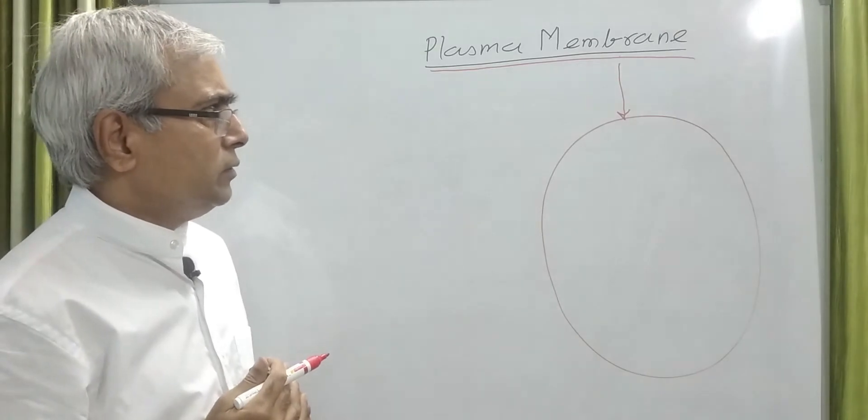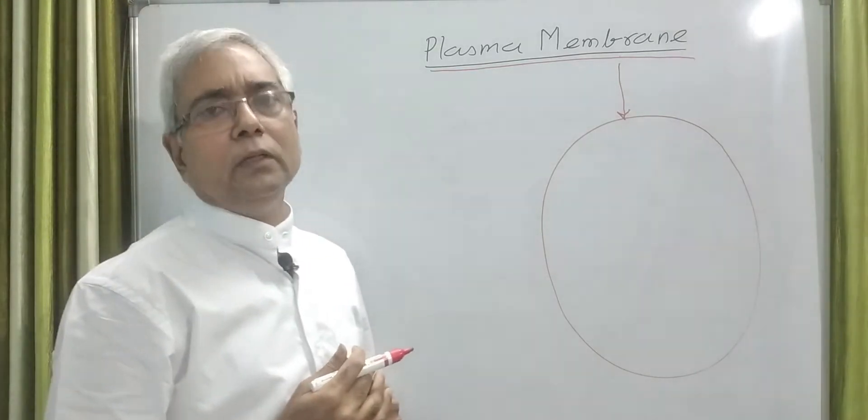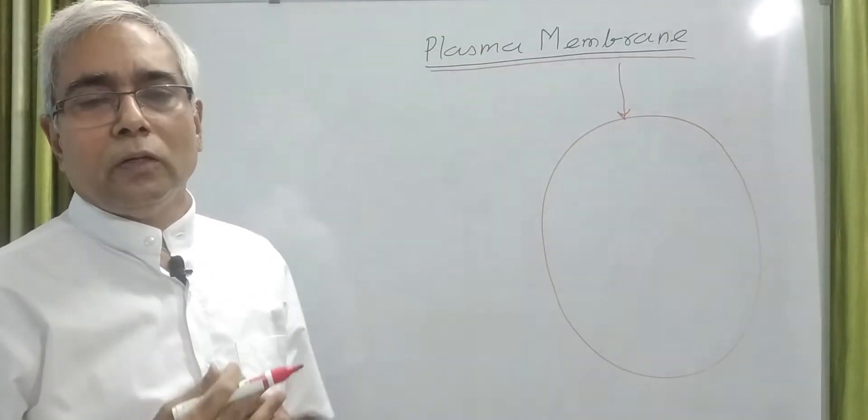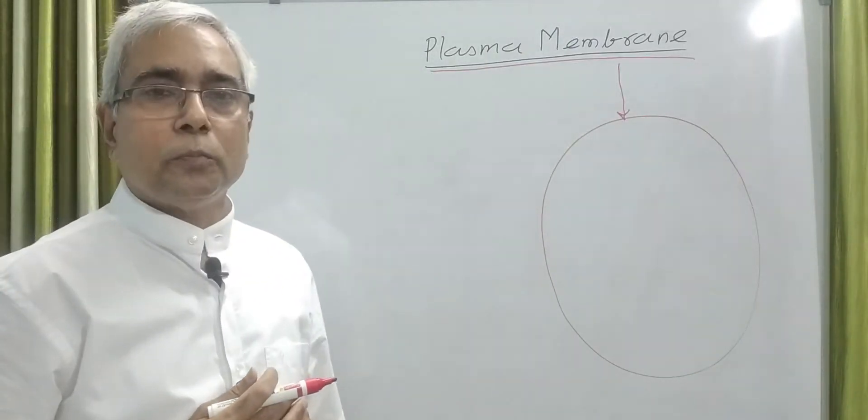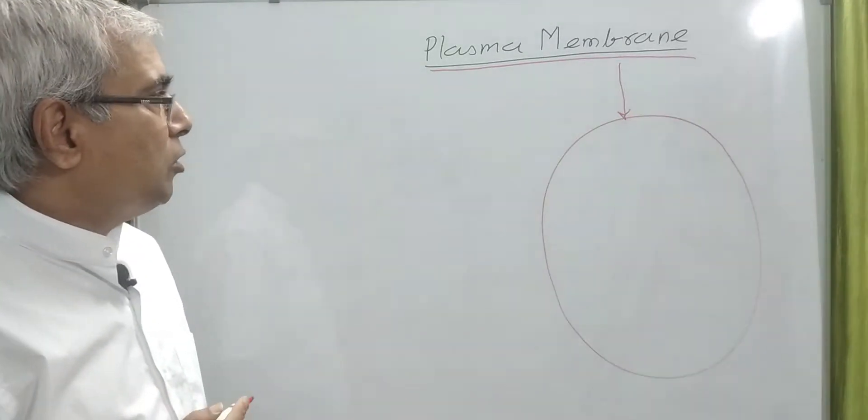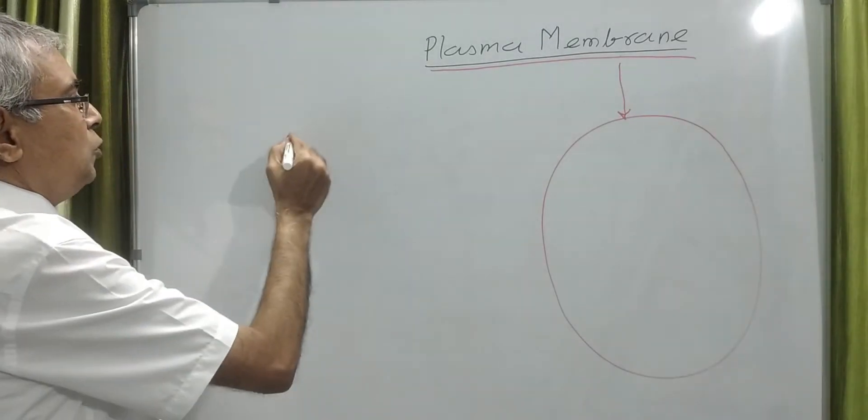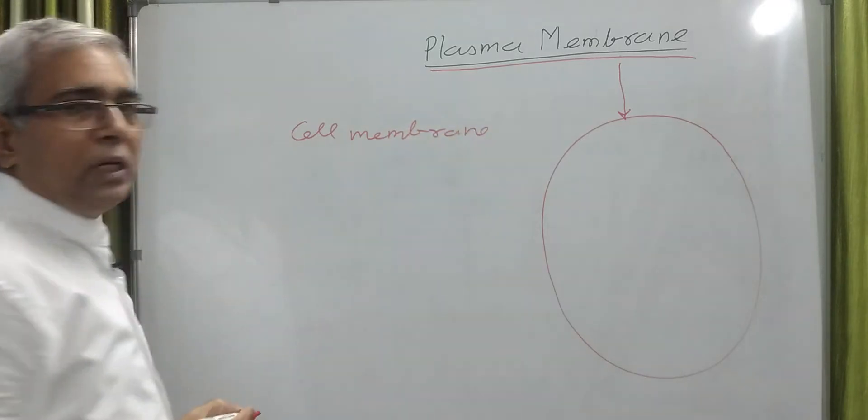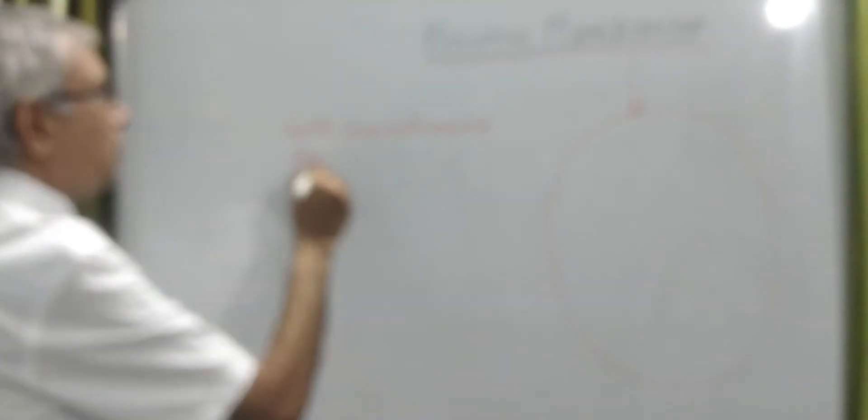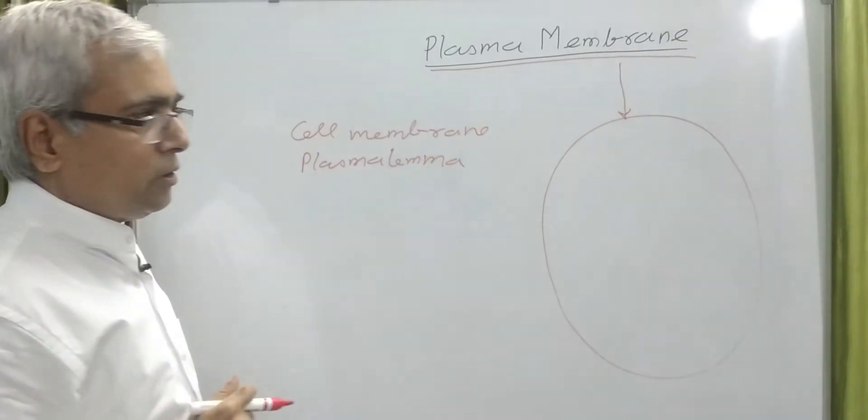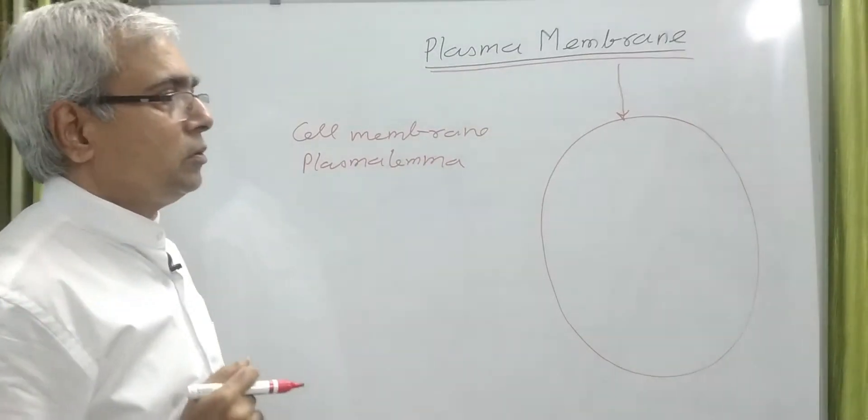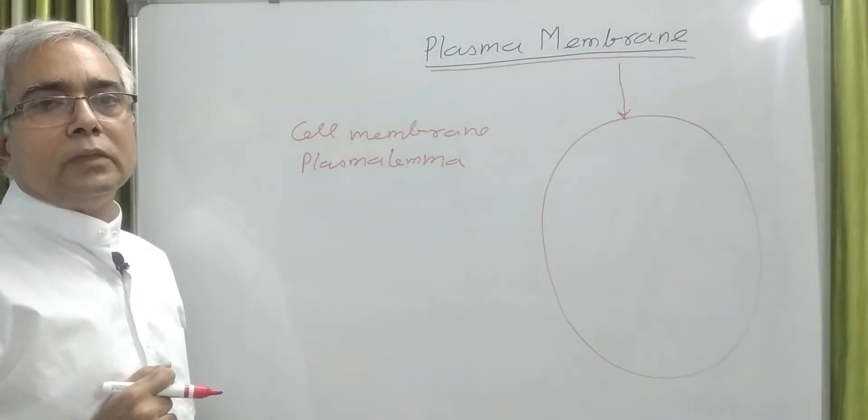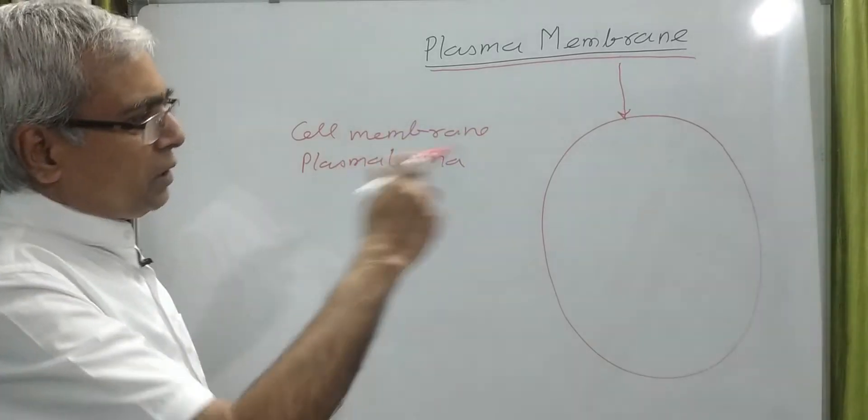In fact, this plasma membrane defines the outer boundary of the cell in both prokaryotic and eukaryotic cells. Plasma membrane is variously termed - it is also known as cell membrane, sometimes it is called plasmalemma. All these three names belong to the same structure, the outermost membrane present around the cell.